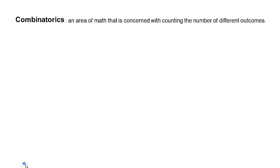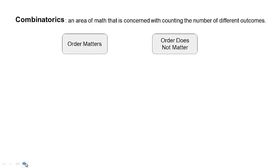Here's where combinatorics comes in. What are combinatorics? They're a branch of math that is concerned with counting — specifically, the number of different outcomes. Think of situations where you've been asked to choose things out of a set. Maybe there are five shirts and you need to choose three of them to take on vacation. This is the type of question that combinatorics would be interested in solving. There are two types of questions in combinatorics: ones where order matters and ones where order does not matter.